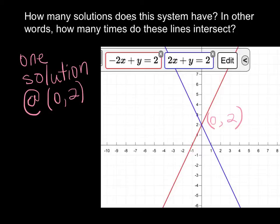I want you to notice that their slopes are different. The slope for the blue line is negative 2, and the slope for the red line is positive 2. So those slopes are different. And whenever you have two straight lines with different slopes, they're going to intersect in one and only one place. And in this case, it's at 0, 2.